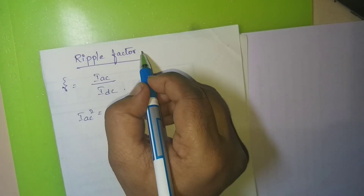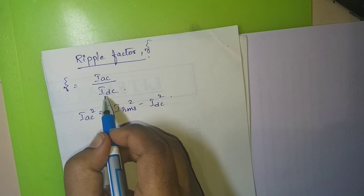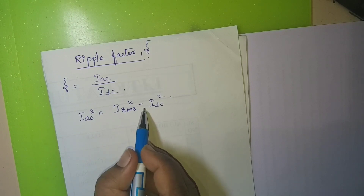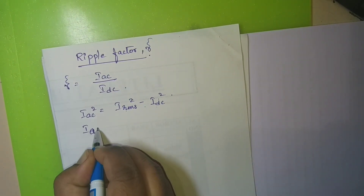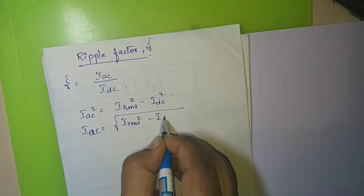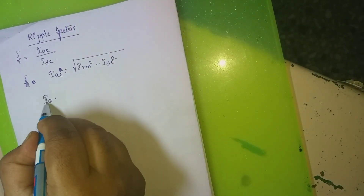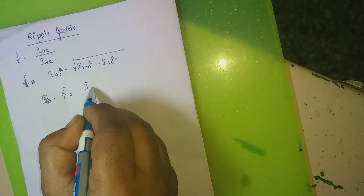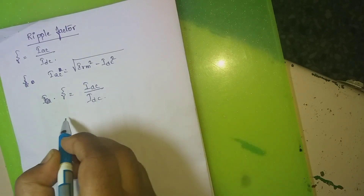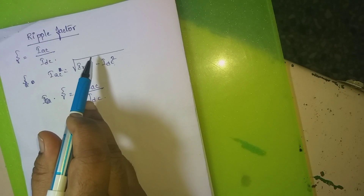To calculate the ripple factor, represented as gamma, the formula is gamma equals IAC divided by IDC. We have the expression IAC squared equals IRMS squared minus IDC squared, so IAC equals the square root of IRMS squared minus IDC squared. Therefore gamma equals IAC divided by IDC, where IAC is the square root of IRMS squared minus IDC squared.